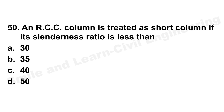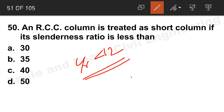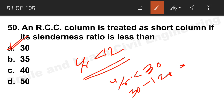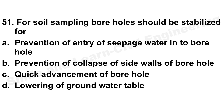Question 50: An RCC column can be considered a short column if its slenderness ratio is less than a threshold. The l/r ratio less than 12 was noted earlier, but per another theory, if l/r is less than 30 then option A is the correct answer. A ratio of 30–120 is an intermediate column and greater than 120 is a long column.